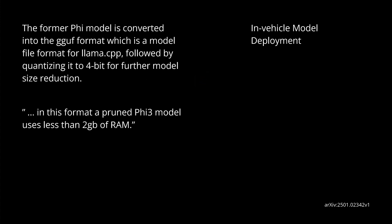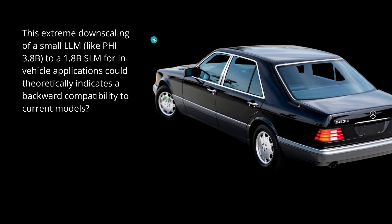Then I found one sentence hidden deep in the text: this pruned model uses less than 2 GB of RAM. I think this is an important piece of information explaining why they perform this extreme model reduction. In my interpretation, this extreme downscaling of the PHI 3.8B for an in-vehicle application could theoretically indicate that Mercedes-Benz wants to achieve backward compatibility with their current hardware — perhaps targeting older vehicle models already in production.